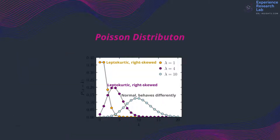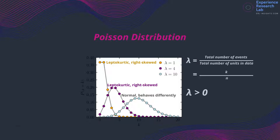Looking back at the distribution, we can also say that Poisson distribution is always asymmetric. It is positively skewed — some say it is right skewed with a long tail toward the right. Regarding kurtosis, it is always leptokurtic, as shown here. In Poisson distribution, the value of lambda, which is the total number of events divided by the number of units in the data, is always higher than zero. As the value increases, the graph looks more like a normal distribution. Nevertheless, it will not behave the same.